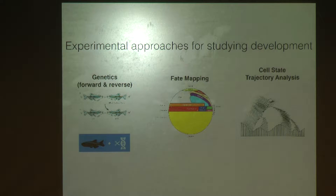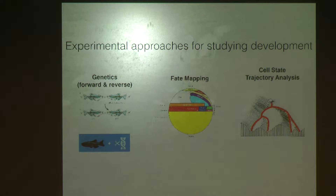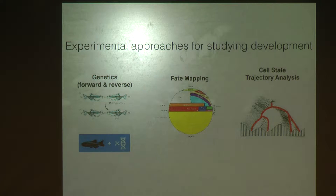Looking back at the classic Waddington landscape model for development, we can imagine cells in a developing embryo become increasingly canalized into discrete cell states. The task is, if we can densely sample all of the cell states as cells are navigating down this landscape, we may be able to reconstruct this process. There are two features to this framework: the landscape that forces cells into different canalized fates, and the path that cells take through this landscape. The set of paths accessible to the cells looks a lot like a tree. What I'll tell you today is our efforts to take whole-embryo single-cell data and use it to reconstruct trees of development.